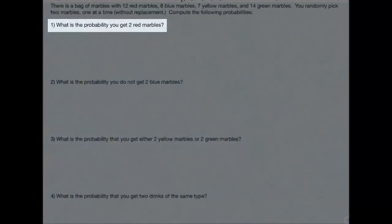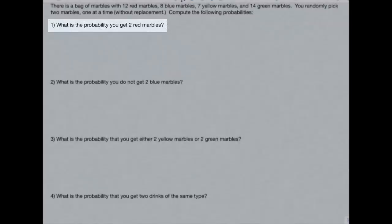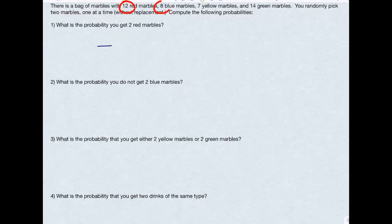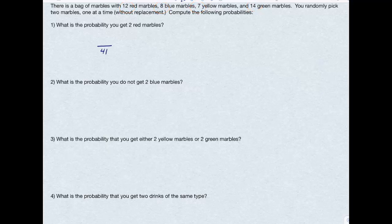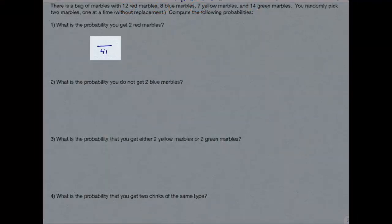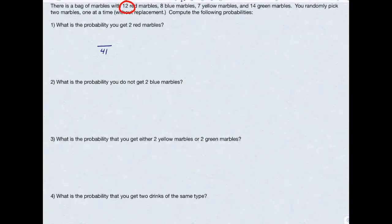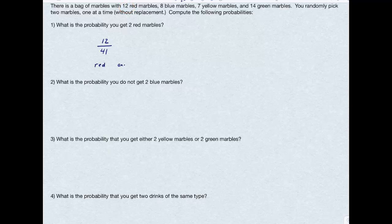The first question asks for the probability you get two red marbles. Well, the first marble I'm picking, if I add up 12 plus 8 plus 7 plus 14, I get that there are 41 marbles altogether. So that's going to be my denominator when I pick the first red marble. So there are 12 red marbles when all of them are in the bag. So I want to get one red marble and another red marble. When I use and, that's multiplication.